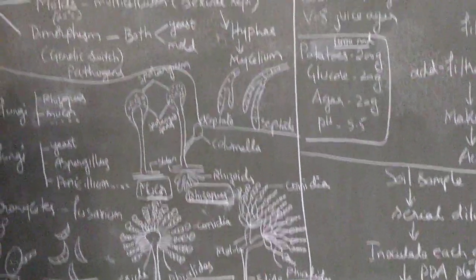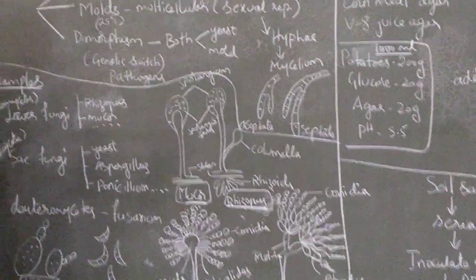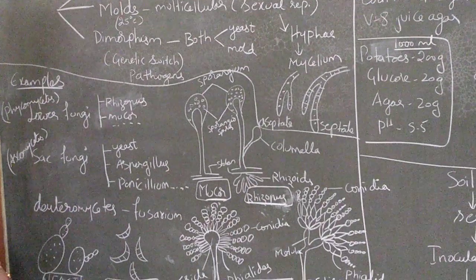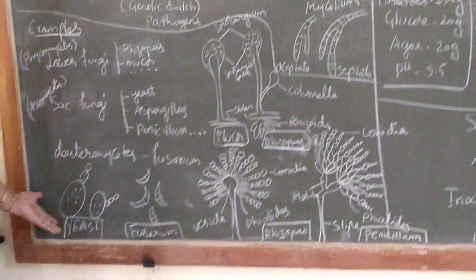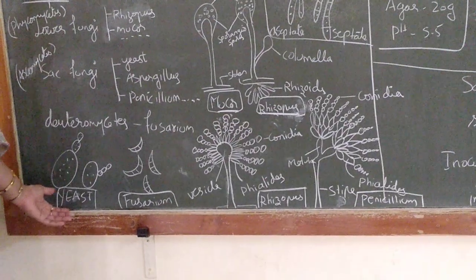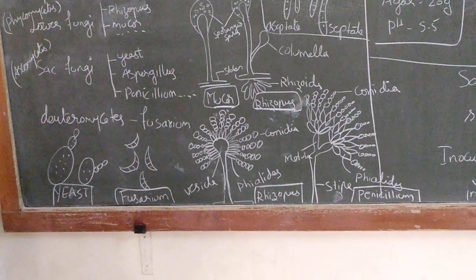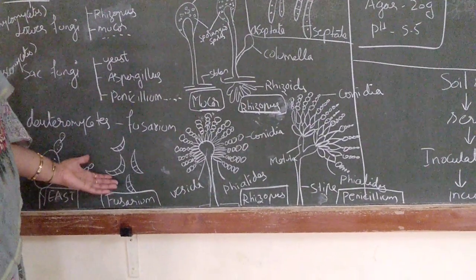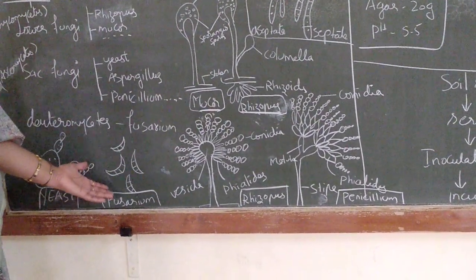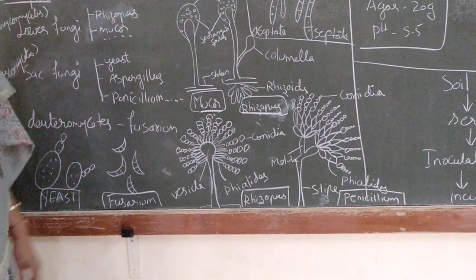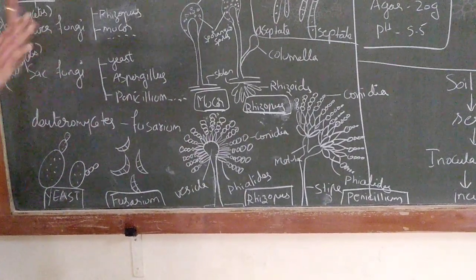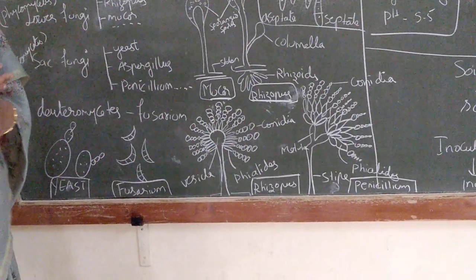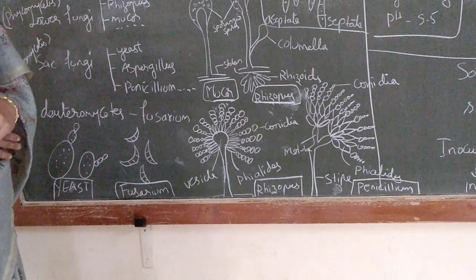That is the easy way to identify Penicillium species. Coming to yeast and Fusarium: yeast cells can be easily identified because you can see budding, whereas for Fusarium you can see the half-moon shaped cells. These are the common fungi explained because they are easy to identify when you go with observation under the microscope.